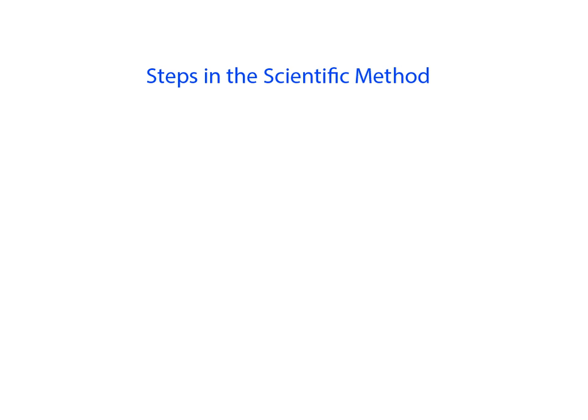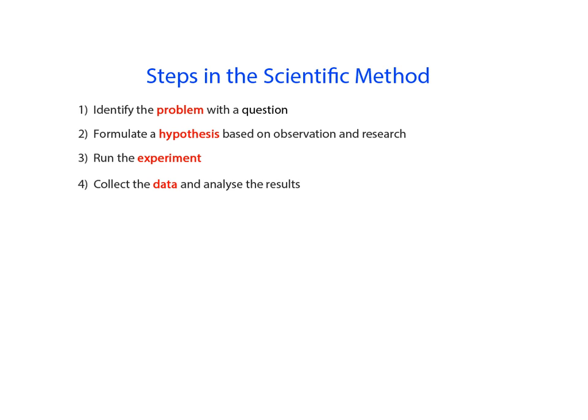In conclusion then, the scientific method is made up of the following steps. First, identify a problem with a question. Second, formulate a hypothesis based on observation and research. Third, run the experiment. Fourth, collect the data and analyze the results. Fifth, come to a conclusion based on experimental data. And finally, communicate your results.